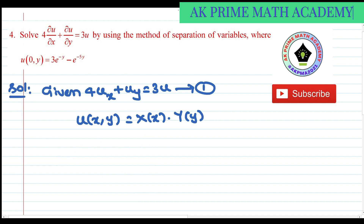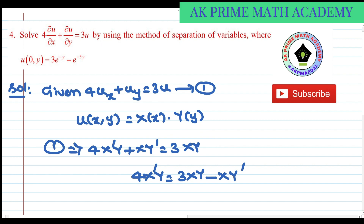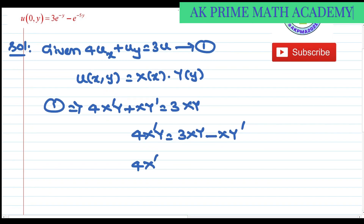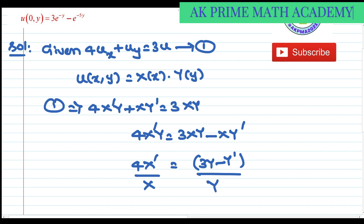So Equation 1 implies: 4·X'·Y + X·Y' = 3·X·Y. Taking X·Y' to the other side and 3·X·Y on the left: 4·X'·Y = 3·X·Y − X·Y'. Taking X common on the right: 4·X'·Y = X·(3Y − Y'). By variable separation, dividing both sides: 4·X'/X = (3Y − Y')/Y, which equals k.